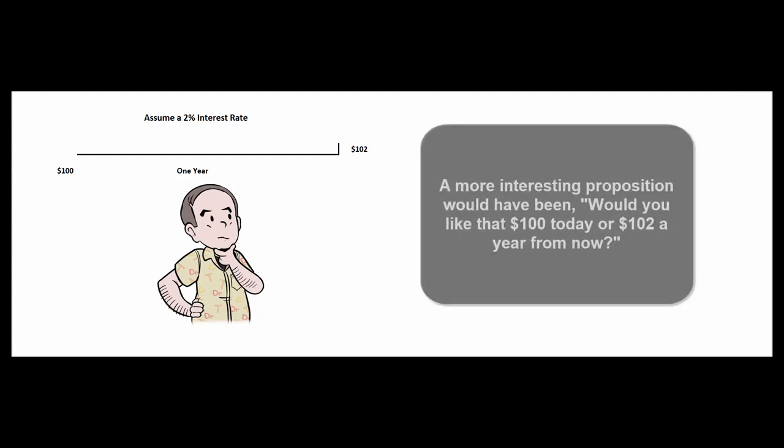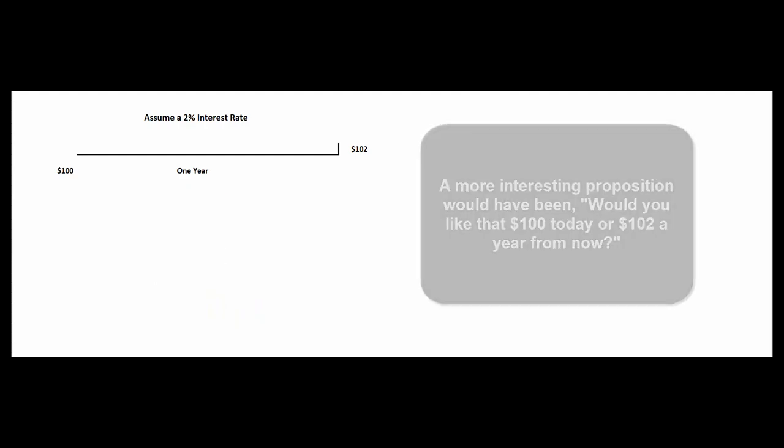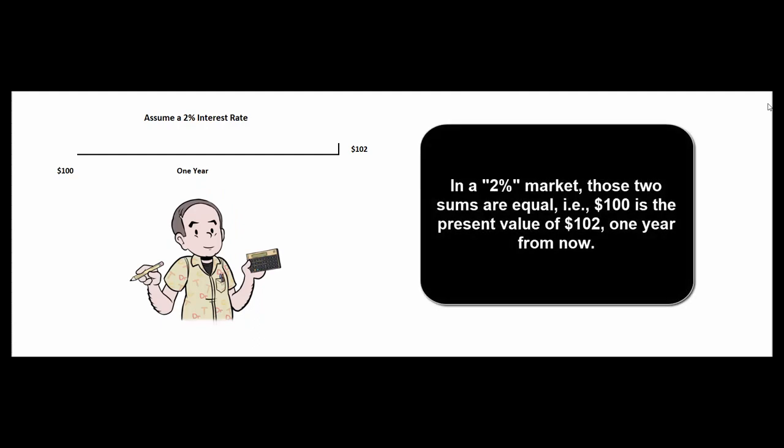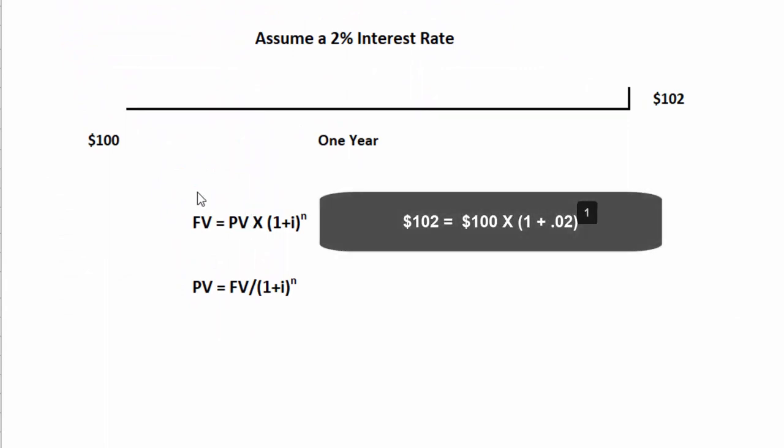The more interesting question would have been had he come to me and said, I can give you $100 today or $102 a year from now. Which would you prefer? Theoretically, those are the same amounts of money. If he gave me that $100 today, I would invest it and have $102 a year from now, or I could just wait until a year from now and collect the $102 from him. So what we say is $102 is a future value of $100, or $100 is the present value of $102 to be received a year from now in a 2% market. And the algebra really isn't that complicated.